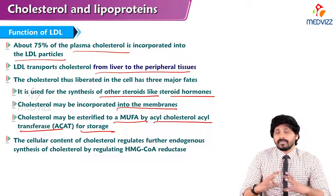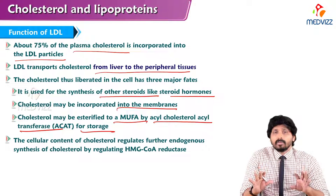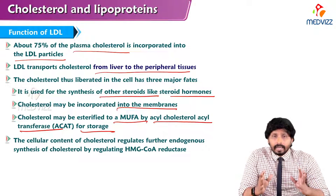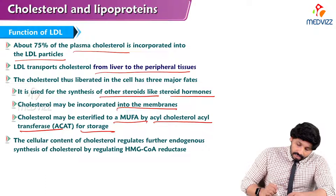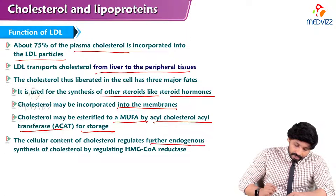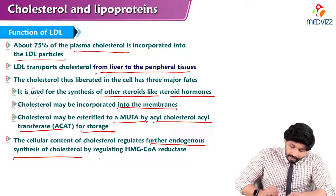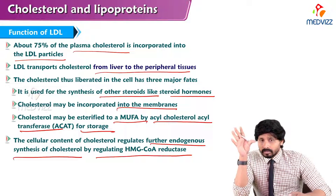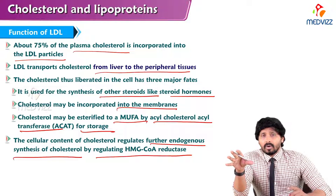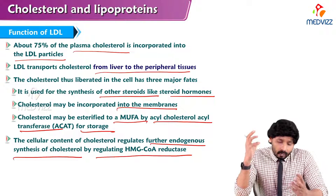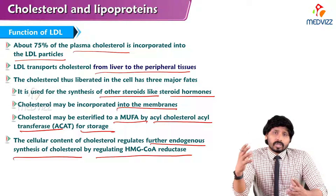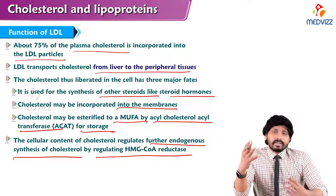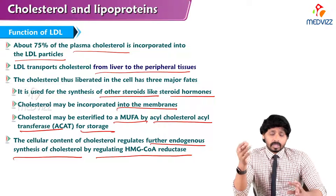ACAT stands for acyl-cholesterol acyltransferase, used for storage. Free cholesterol is not suitable for storage — only the ester form is. For this esterification, we require the enzyme ACAT. The cellular content of cholesterol regulates further endogenous synthesis of cholesterol by regulating HMG-CoA reductase. The moment cholesterol enters inside the cell, the cell senses whether it has to produce more cholesterol or not, regulating production through genetic regulation.